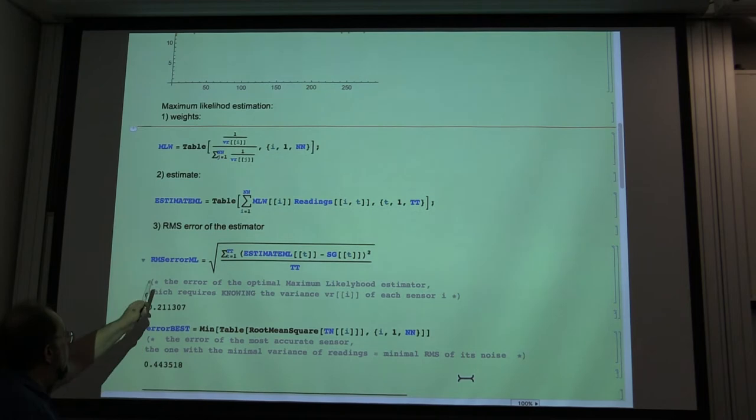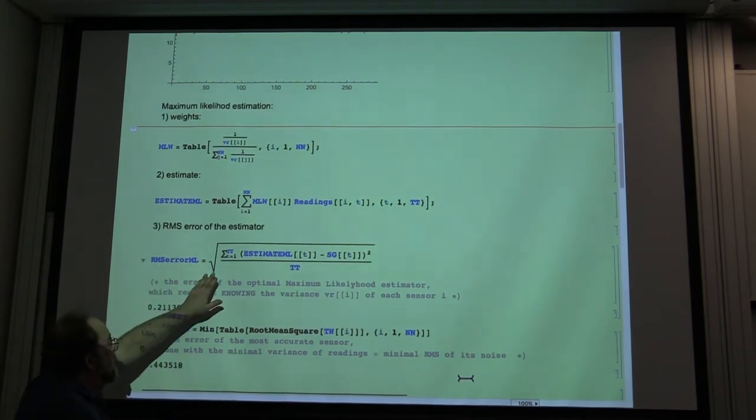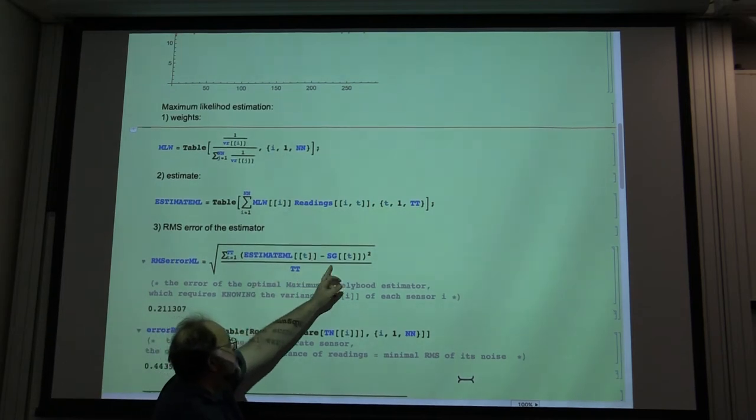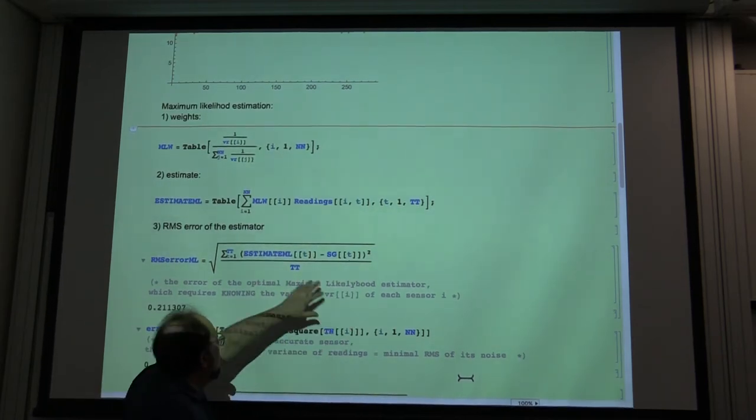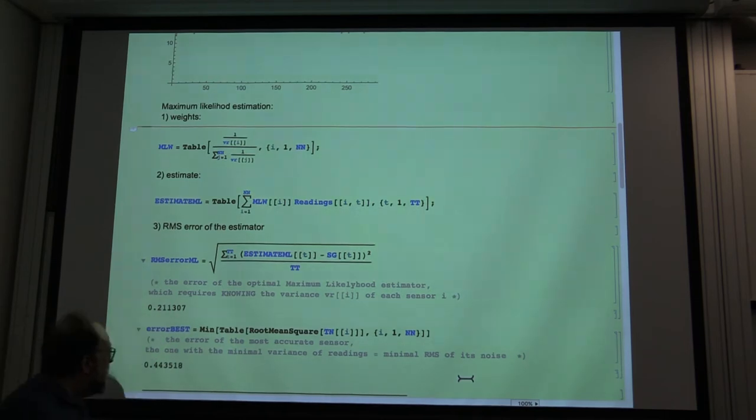And here we just compute essentially the variance of such an estimate, namely the root mean square, not the variance, the standard deviation, right? Because there is square root of such an estimator. Because these are the estimations and this is the true value. So this will give you the root mean square error or standard deviation of the sensor. And lo and behold, we can run it.